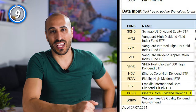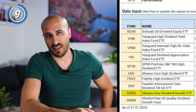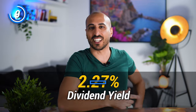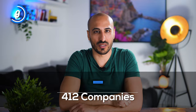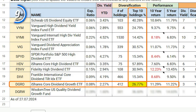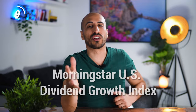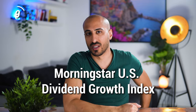Next up is DGRO, the iShares Core Dividend Growth ETF. DGRO has a dividend yield of 2.27%, an expense ratio of 0.08%, and 412 holdings. The top 10 weigh 26.77% of the portfolio, and the average annual return was 11.29% in the last 10 years and 11.22% in the last 5. DGRO tracks the Morningstar US Dividend Growth Index, which gives access to US companies that have a history of consistently growing dividends.